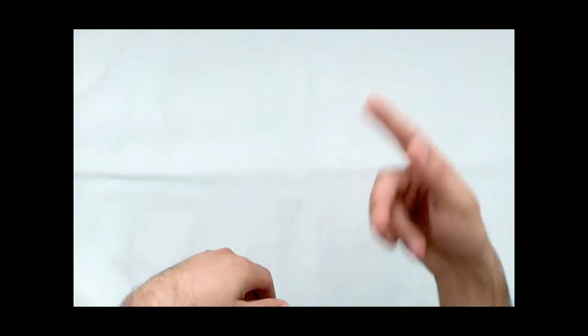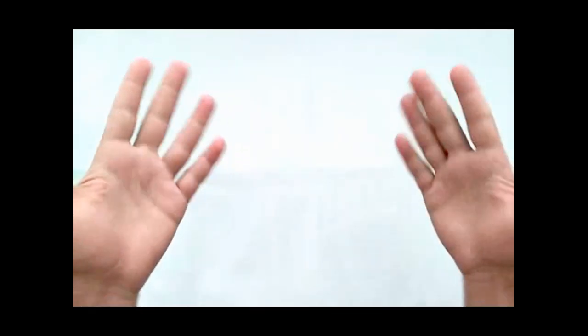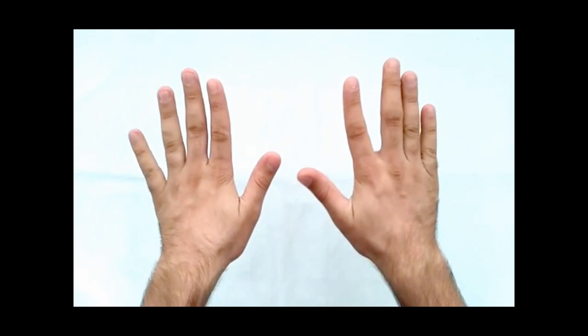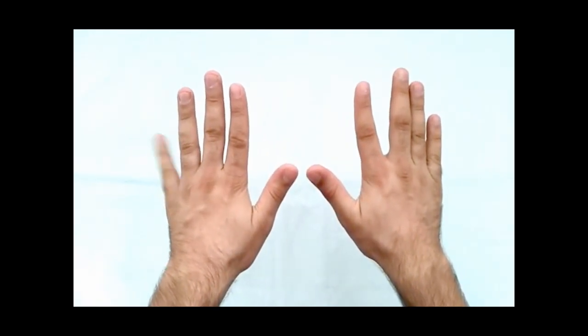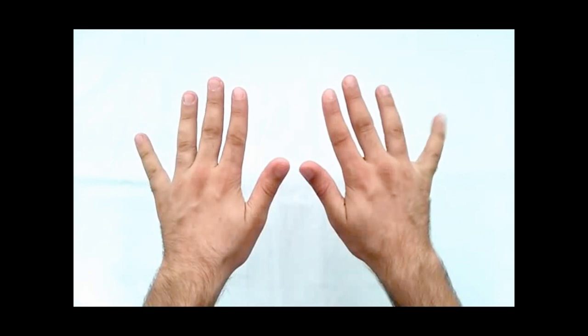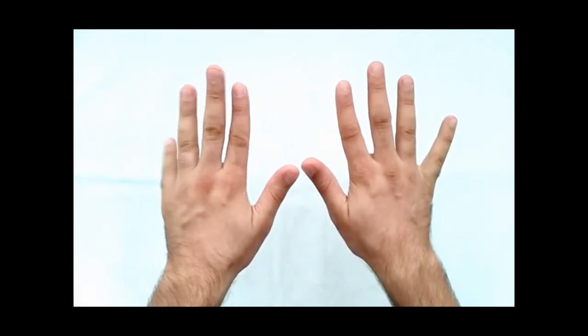I am going to teach you an easy way to learn the nine times multiplication table. Put your hands in front of you. Your fingers represent the numbers one through ten. One is your left pinky, ten is your right pinky.